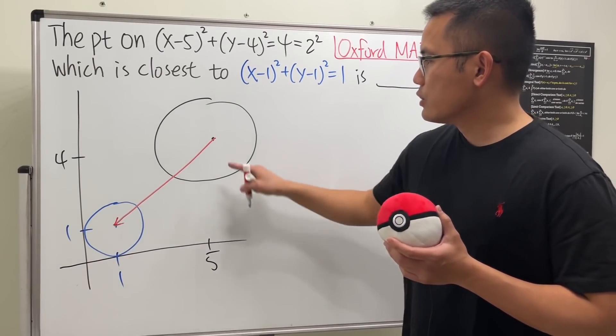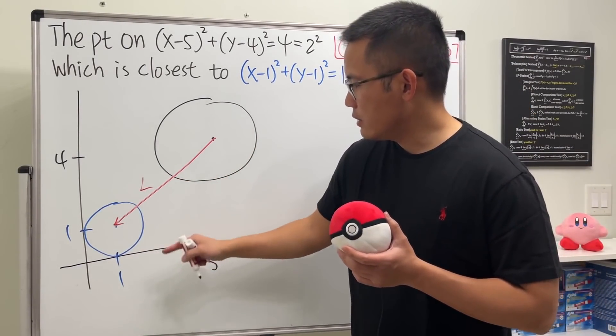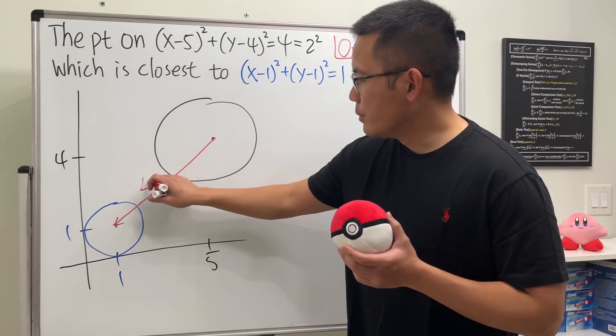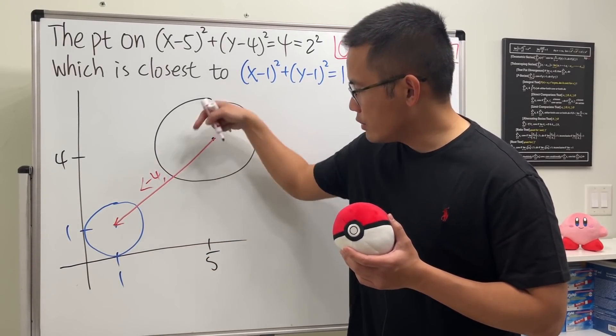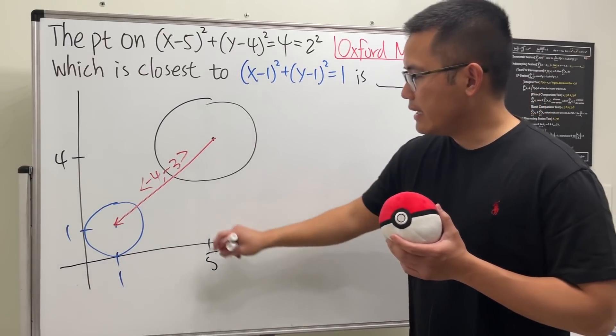So the vector from here to here, you can look at this from here to here. If you look at this direction, it will be negative 4 and go down, so it's (-4,-3) like so. Cool.